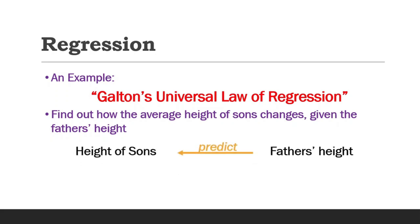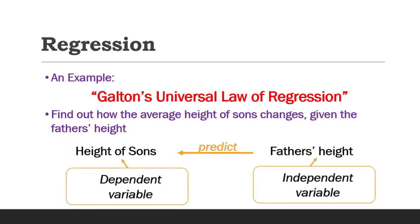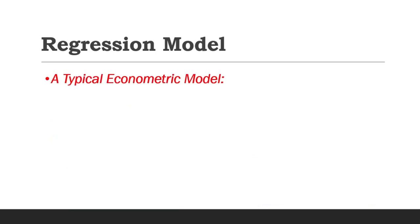Thus, height of son becomes the dependent variable, and father's height becomes the independent variable. A typical econometric model to reflect Galton's Universal Law of Regression could be of the form Y equals beta1 plus beta2 X plus u. In this case, Y represents the height of son, which is the dependent variable, X represents the father's height, which is the independent variable...